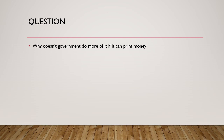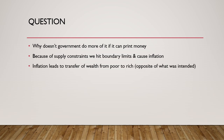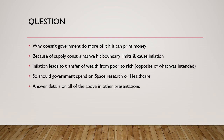Why doesn't the government print more money? Because we can hit supply constraints or boundary limits — there may not be slack in the factors of production, which can cause inflation. Inflation leads to a transfer of wealth from poor people to the rich generally, which is exactly the opposite of the government's intention. You may also ask: should the government be spending on space research or healthcare? In a credit-based monetary system, many times we don't have to make such stark choices. Detailed answers to these questions can be found in the links posted in the description of this video.